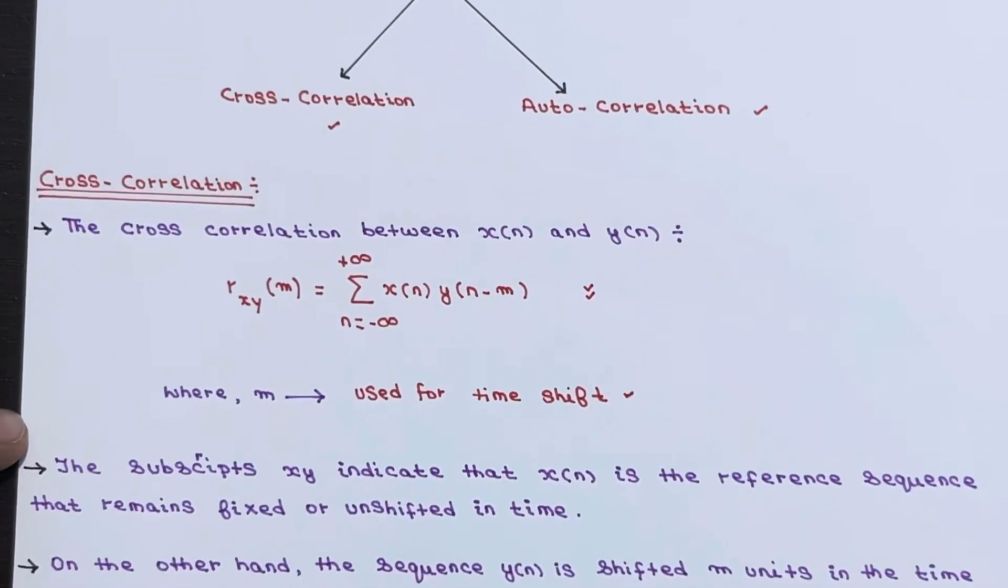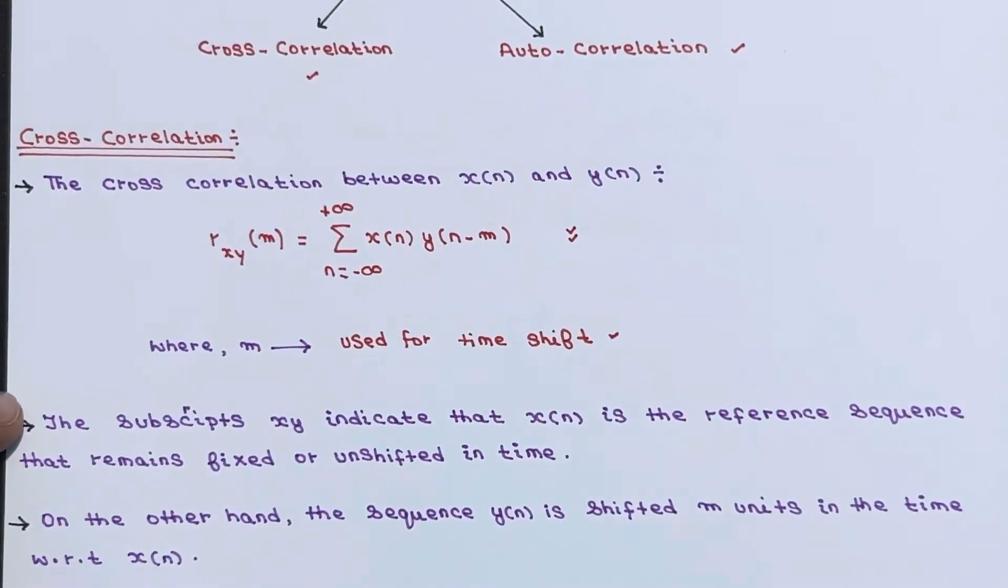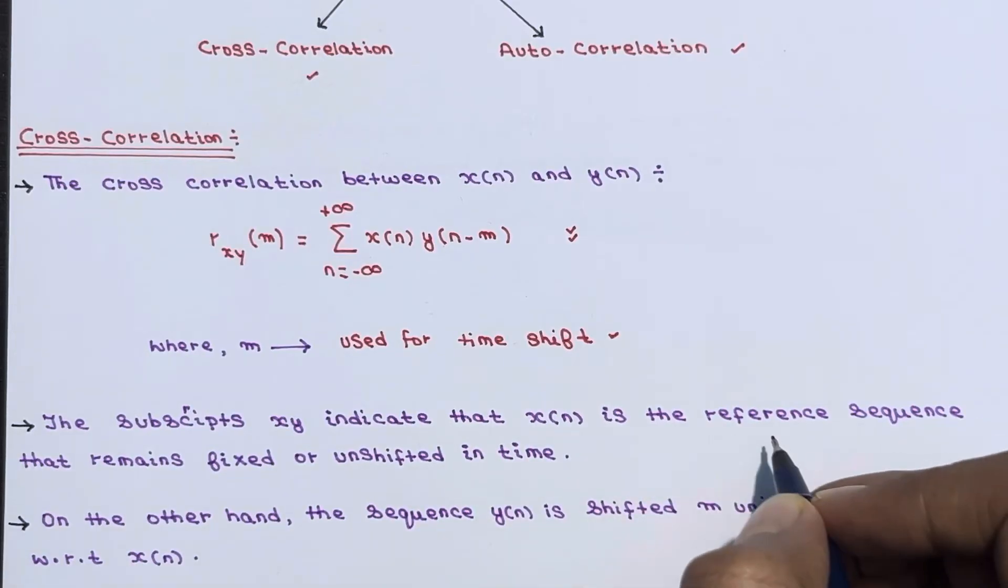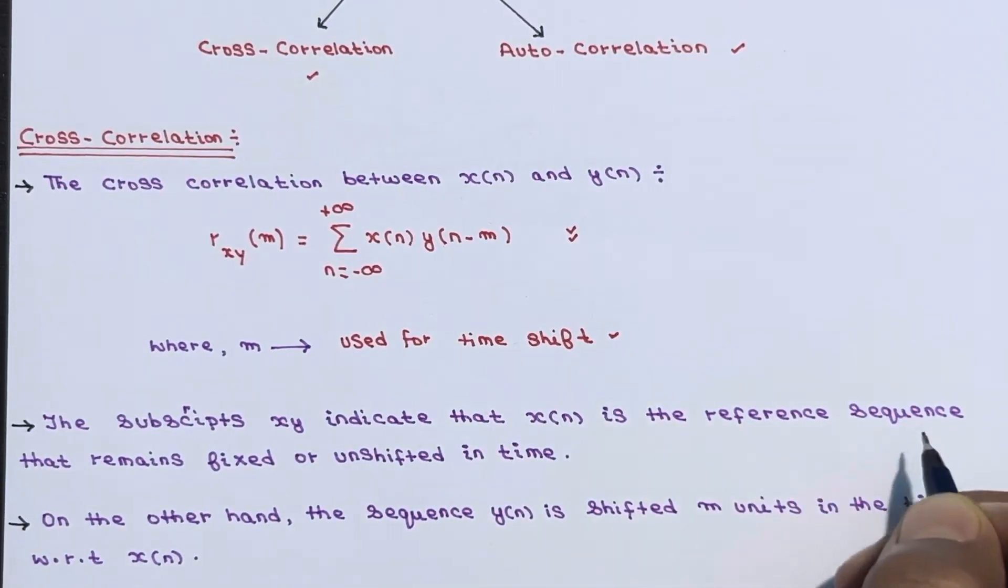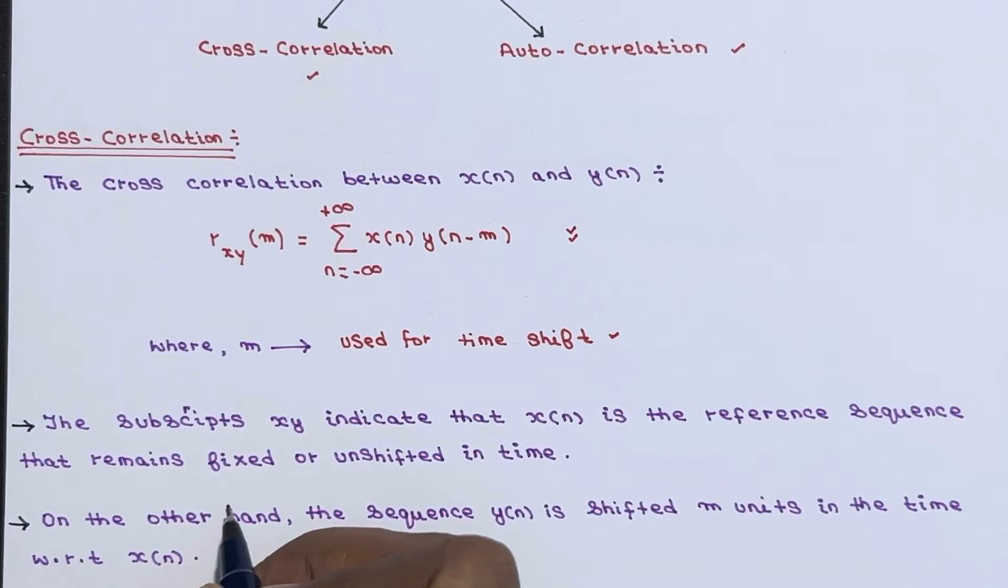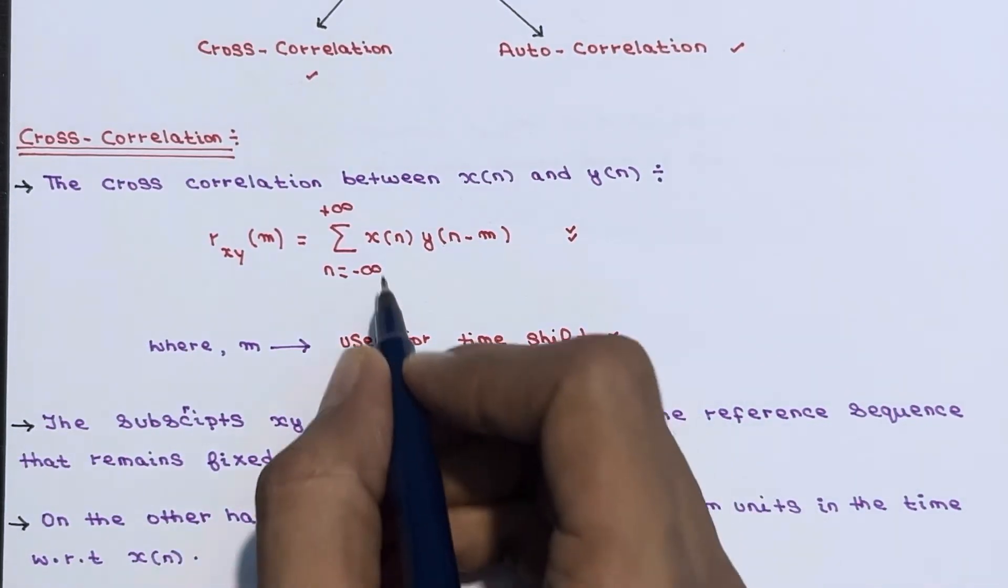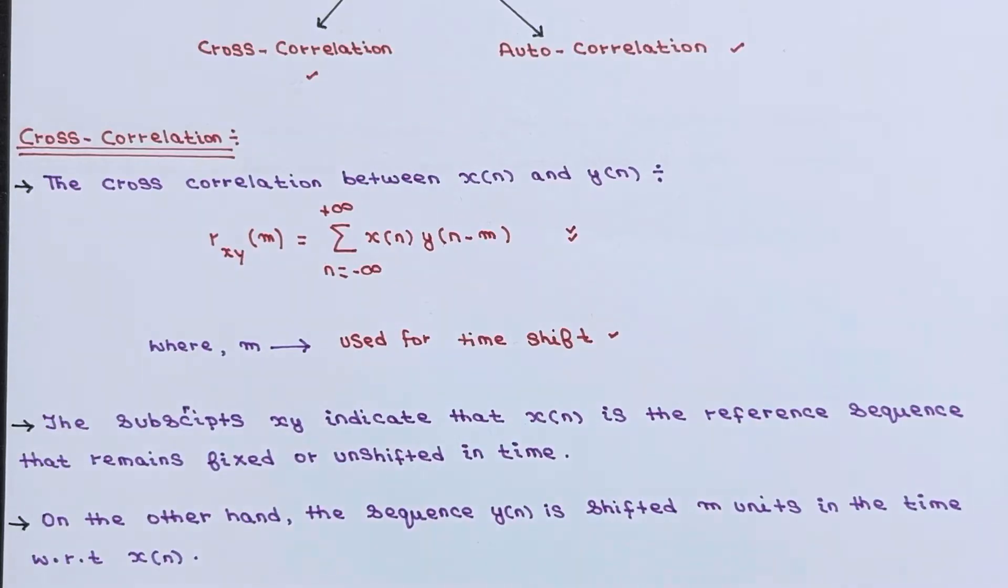So now let's understand some more thing. So basically the subscripts, this xy, indicate that x of n is the reference sequence that remains fixed or you can say unshifted in time. There is no shift in x of n. So this is a reference sequence.